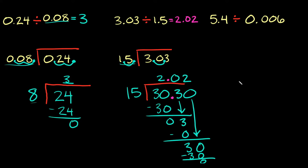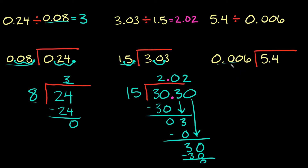Let's do one more example. First step: rewrite the problem. We have 5.4 divided by 0.006. The second step is taking your divisor and turning it into a whole number by moving the decimal to the end — we move it 1, 2, 3 times. So instead of 0.006 this is simply going to be 6.